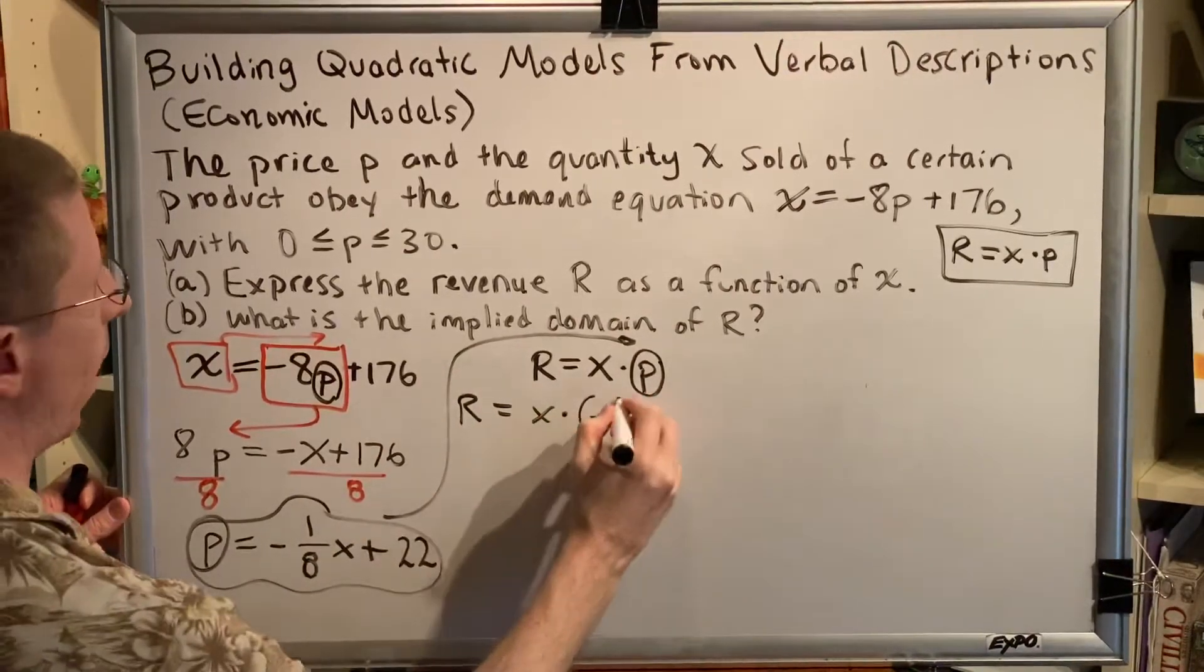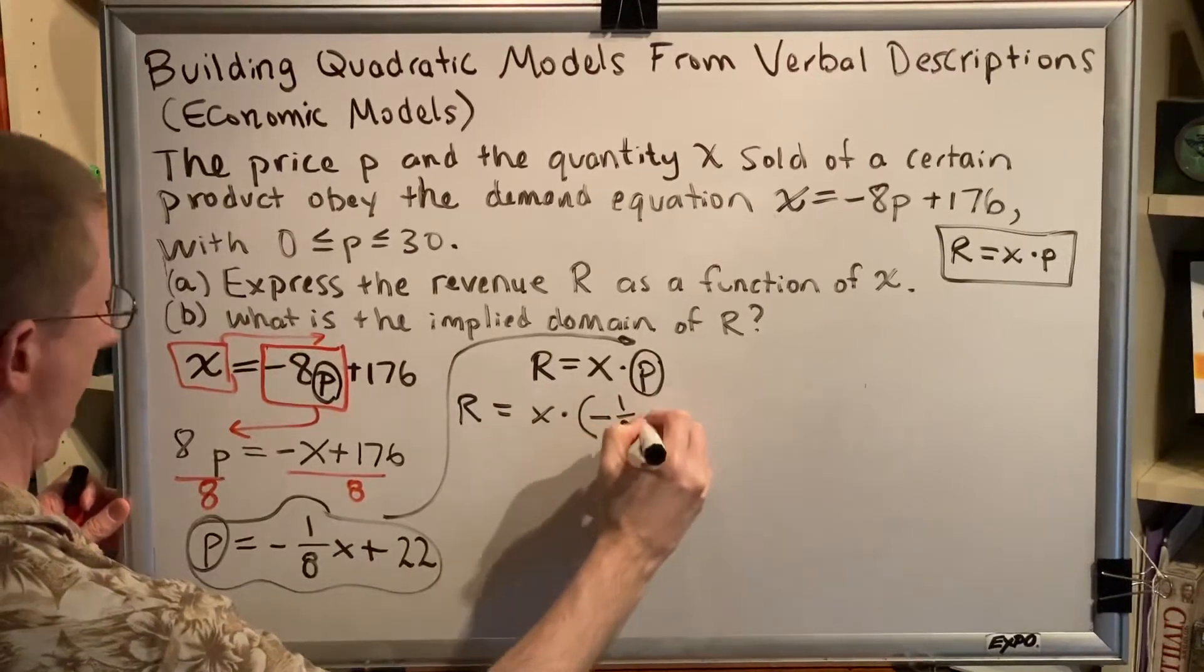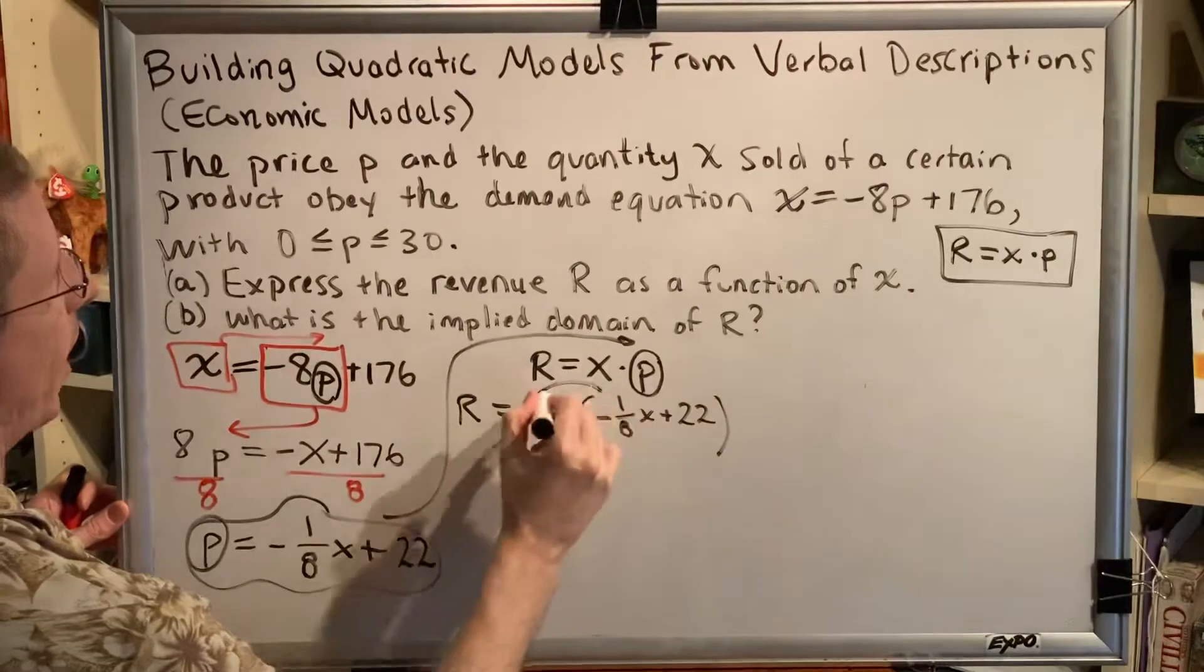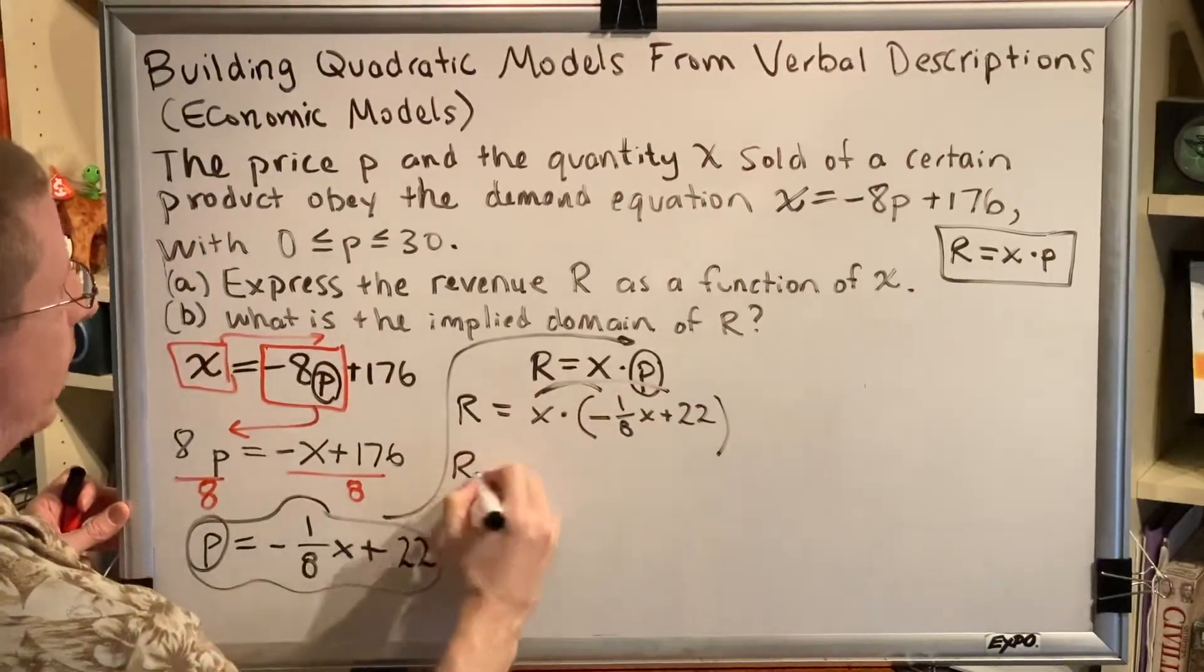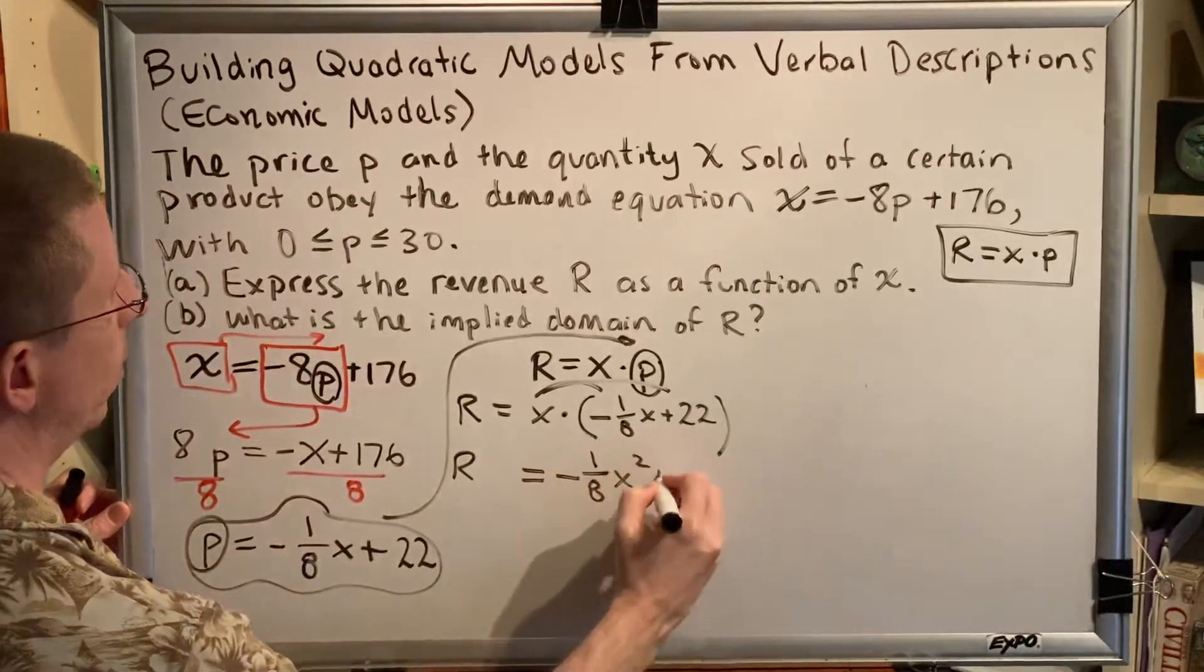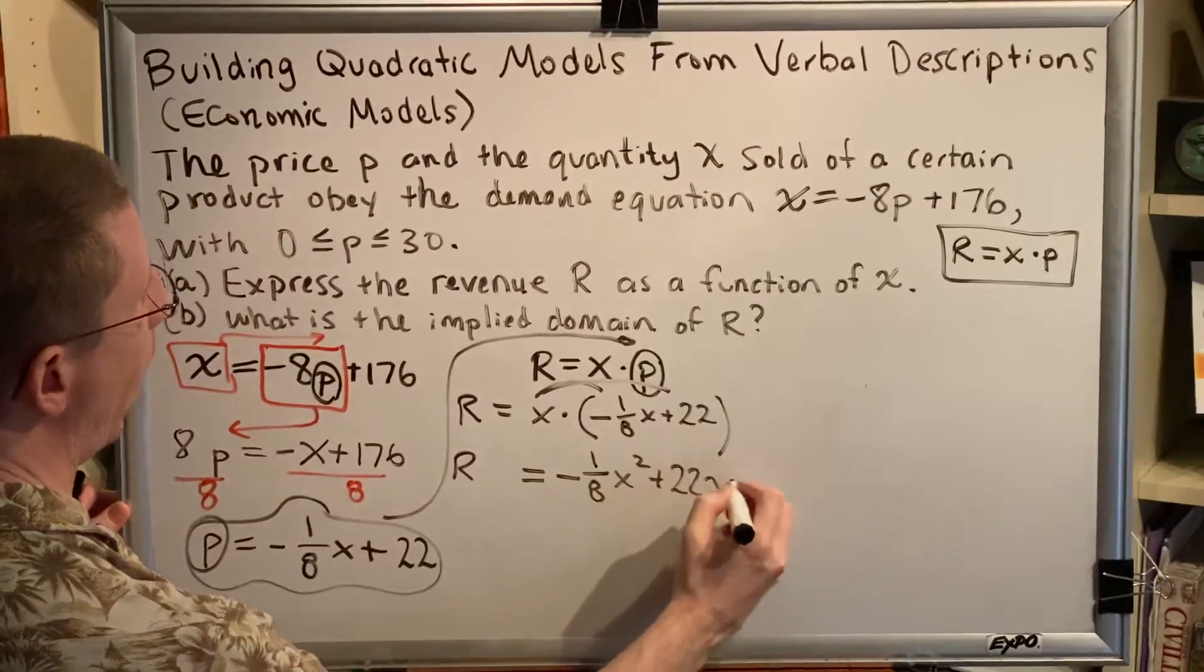But instead of writing p, we'll write -1/8·x + 22. Distributing the x to both of these terms, we're going to have R = -1/8·x² + 22x.